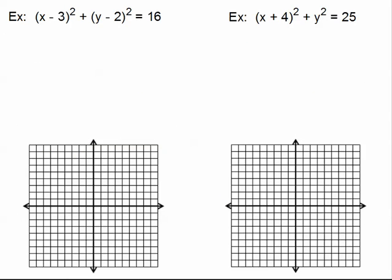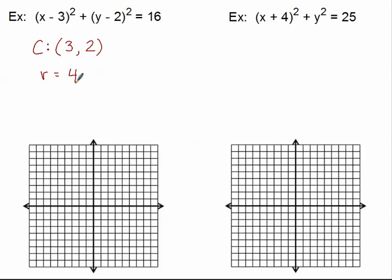Let's graph a couple of circles. Both are already in standard form with an x squared quantity, a y squared quantity, equal to sixteen. The first thing to identify is the center. H comes from the x quantity — x would have to be 3 to make the quantity zero, so h = 3. Y would have to be 2 to make its quantity zero, so the center is (3, 2). The radius is the square root of 16, which is 4.